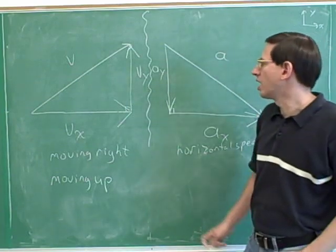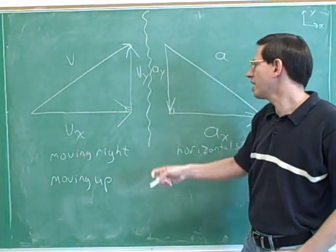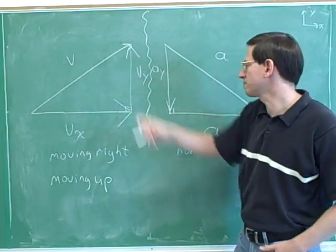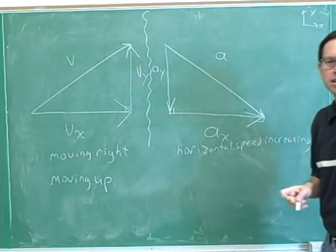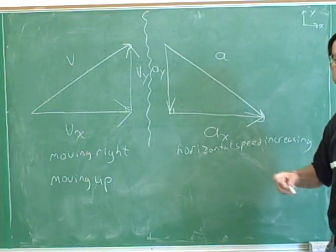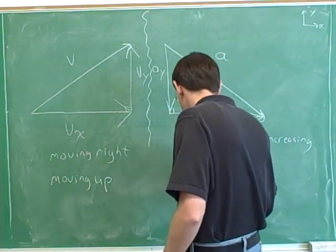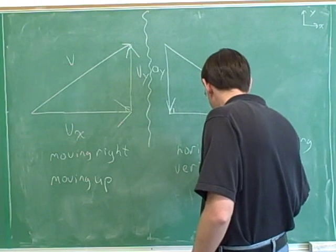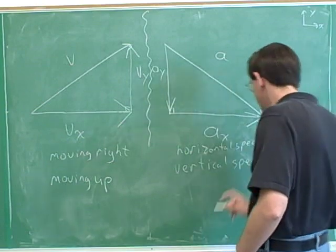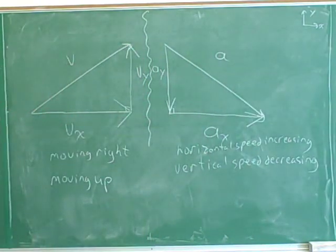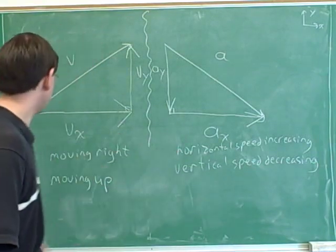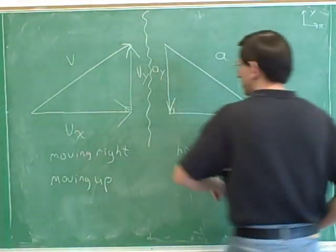And how about vertically? Our vertical velocity is pointing up, but our vertical acceleration is pointing down. The arrowhead on the vertical velocity is pointing up, but the arrowhead on the vertical acceleration is pointing down. So vertically, the acceleration and the velocity are anti-parallel. That means vertically, we're slowing down — our vertical speed is decreasing. And now we've completely analyzed the object: it's moving to the right with increasing horizontal speed, and also moving up with a decreasing vertical speed.